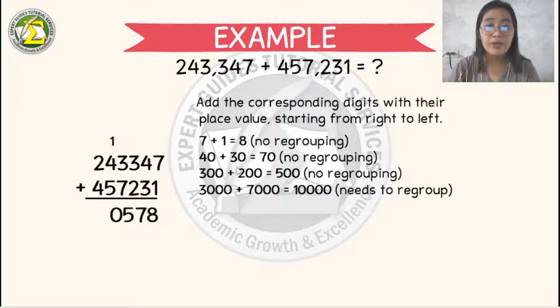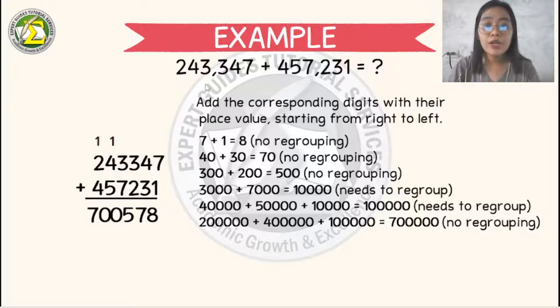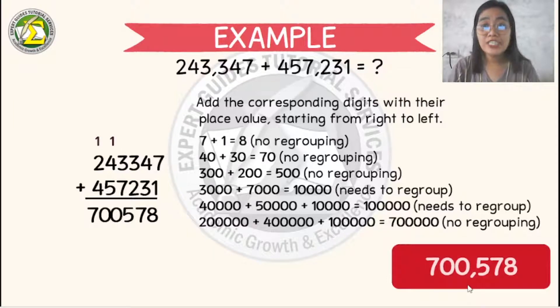So 2 plus 4 in 100,000 values, we have 6. Don't forget to add 1 to the result. So it will become 7. So therefore, the sum of these 2 addends will become 700,578.